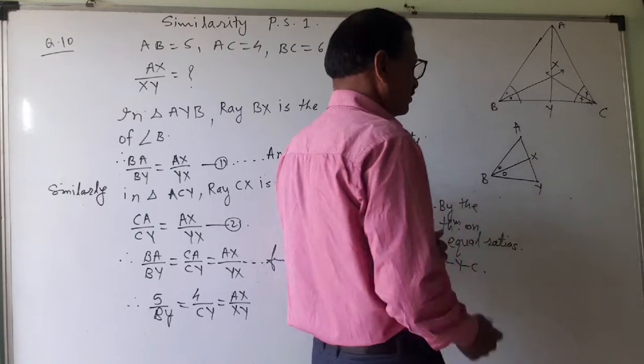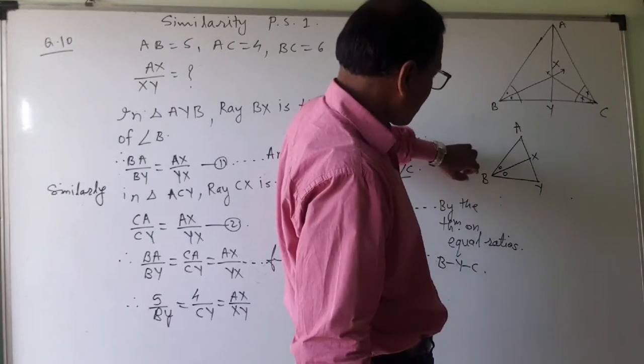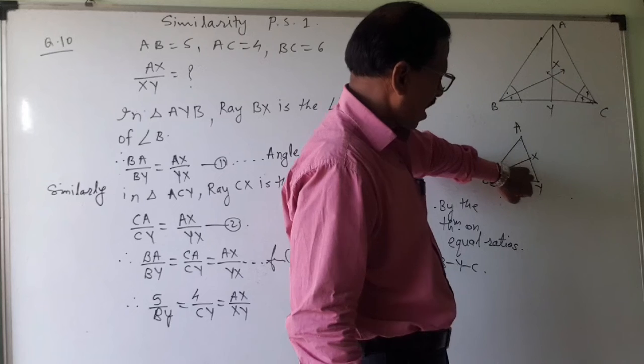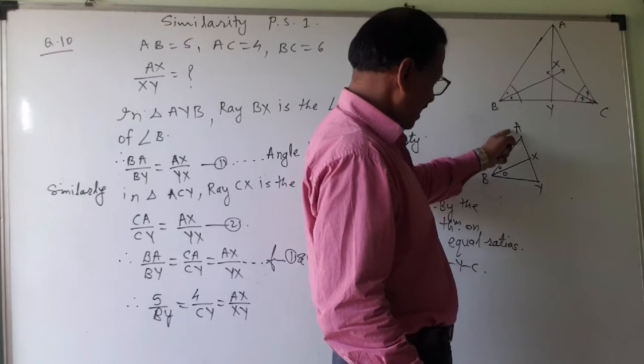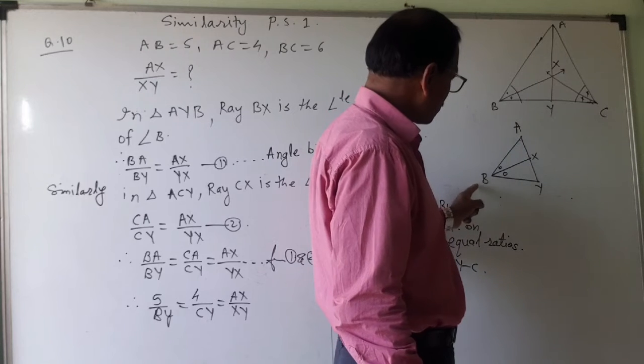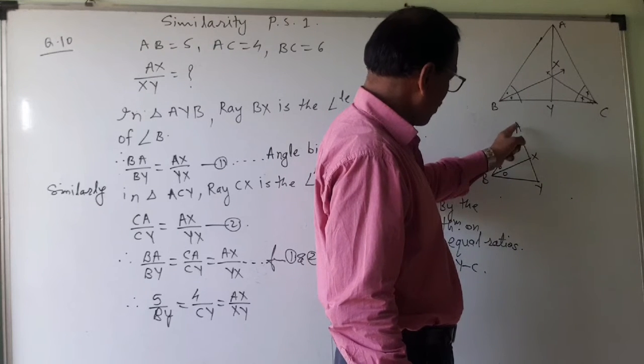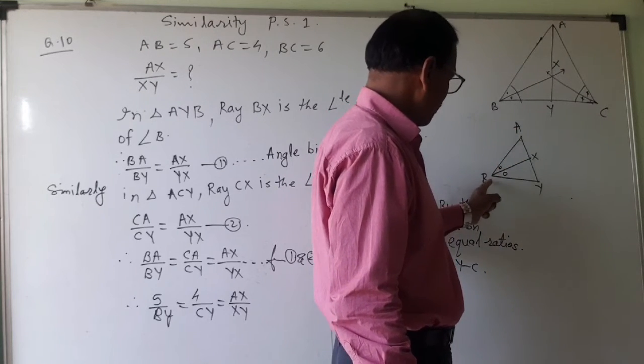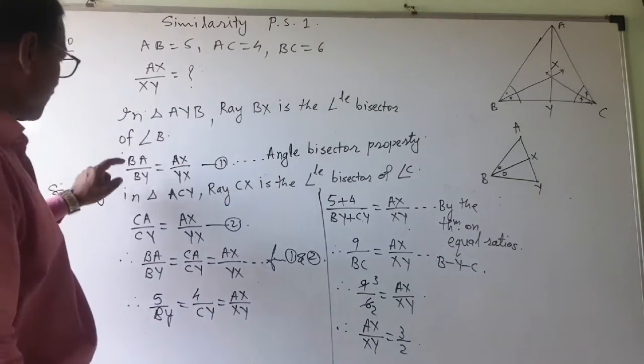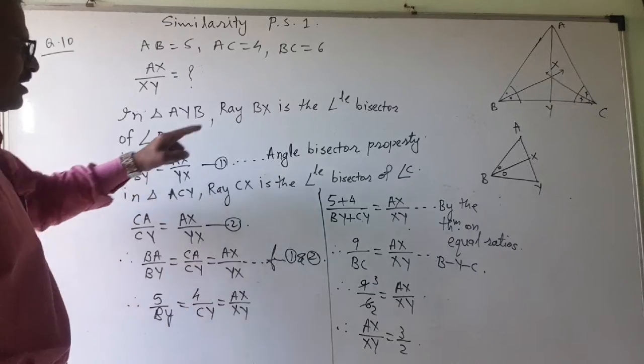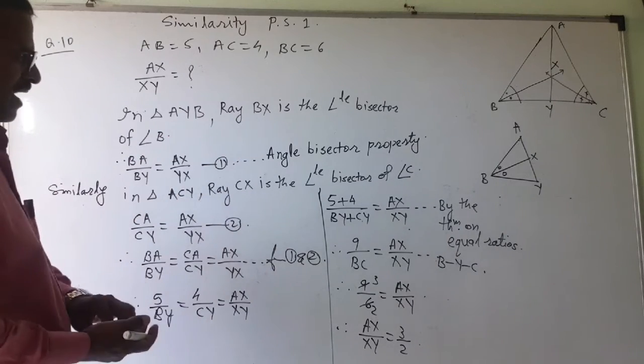So what is the angle bisector? BA upon BY. So now I have taken the name BA from AX, then BY, then YX. So that way I have written BA upon BY is equal to AX upon YX. That is the angle bisector property.